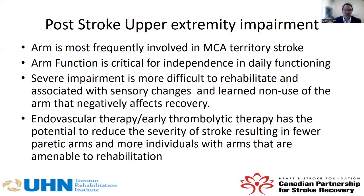We know that severe impairment of the arm is more difficult to rehabilitate and is associated with sensory changes, and people learn — because of the lack of function — not to use the arm, and that this creates negative effects on recovery. There have recently been enhancements in acute therapy with endovascular therapy that can remove clots from the middle cerebral artery, as well as the use of early thrombolysis. This has the potential to reduce the severity of stroke, meaning fewer people with a fully paretic arm and more individuals with arms that are amenable to rehabilitation.